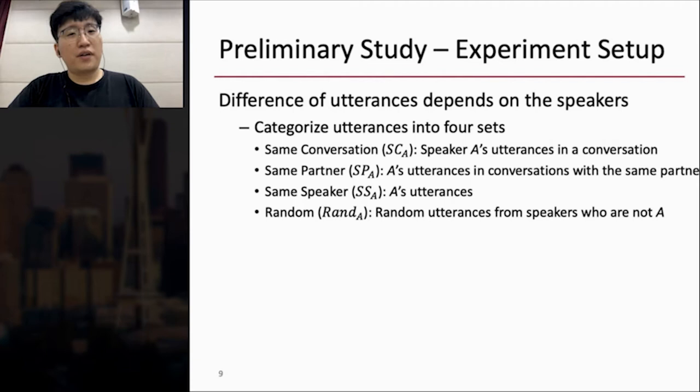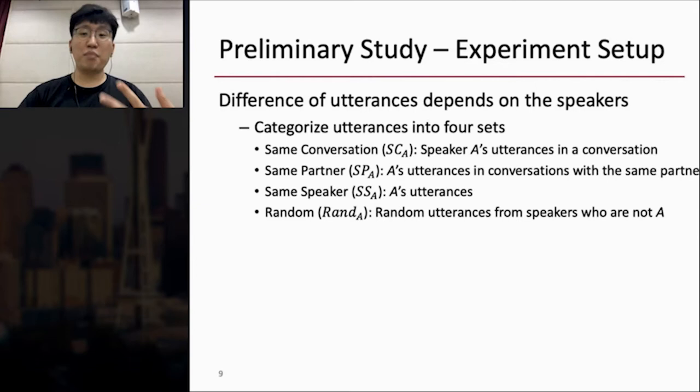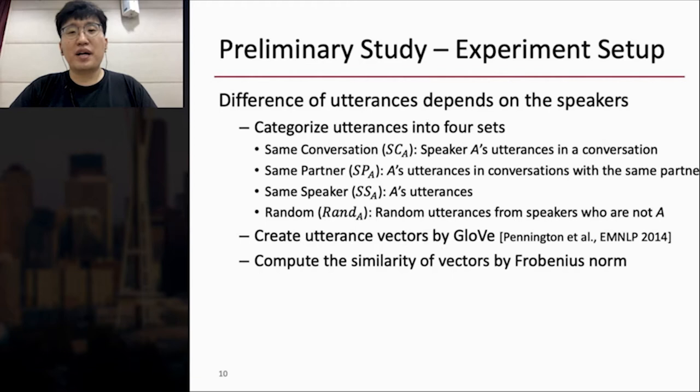First one is speaker's eighth utterance in a conversation that's named Same Conversation. Second one is eighth utterance in a conversation with the same partner named Same Partner. Third one is all eighth utterances that name Same Speaker. And final one is random utterance from speakers who are not A named Random. And after that, I create utterance vectors by GloVe and compute the similarity of vectors by Frobenius norm.